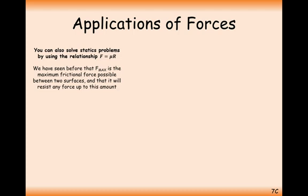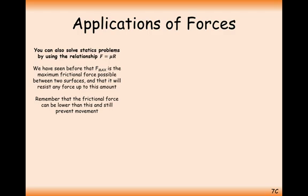We've seen this kind of maths before. We've seen F equals μR — friction equals the coefficient of friction μ times the reaction force between the ground and particle R. The friction value can be anything up to this value of μR, as long as it stops the particle from moving. If it's just slowing the particle down, then it will be μR exactly.